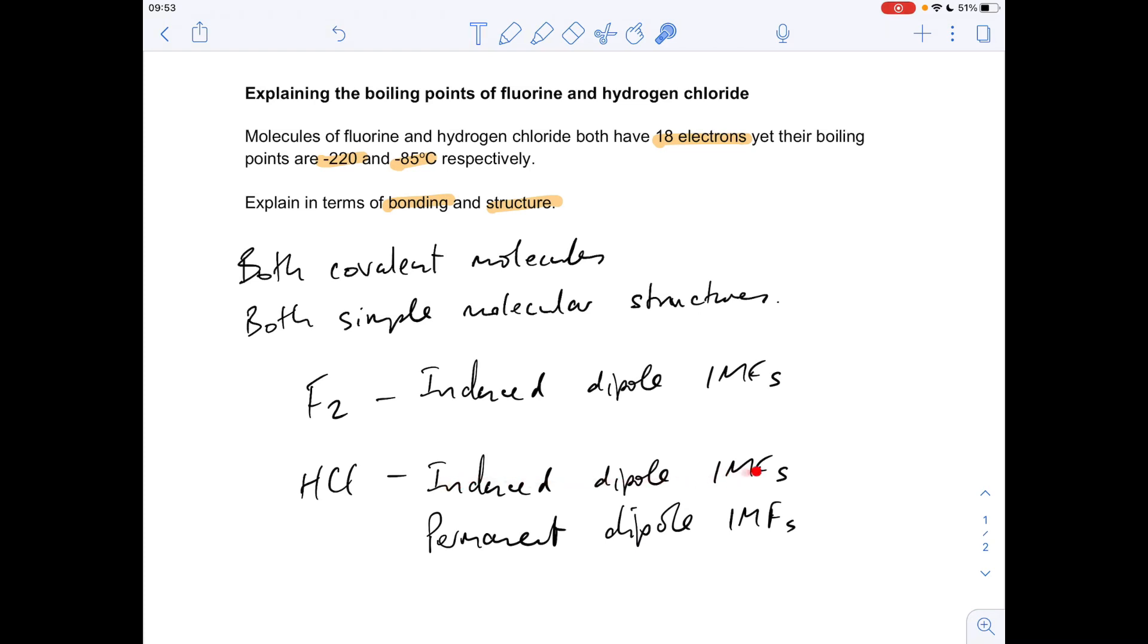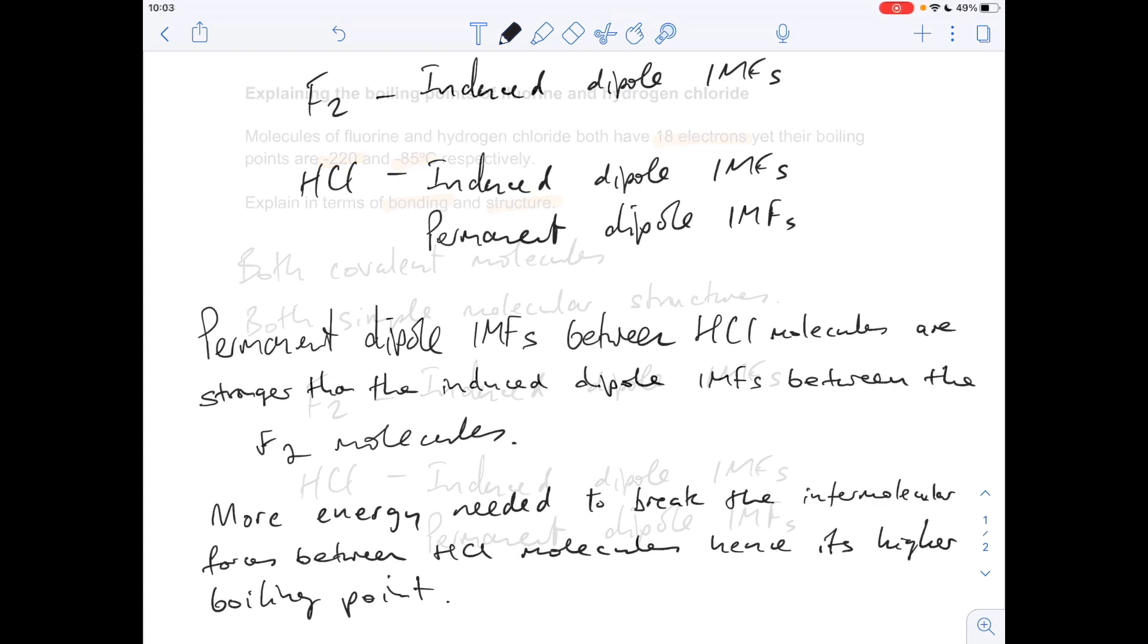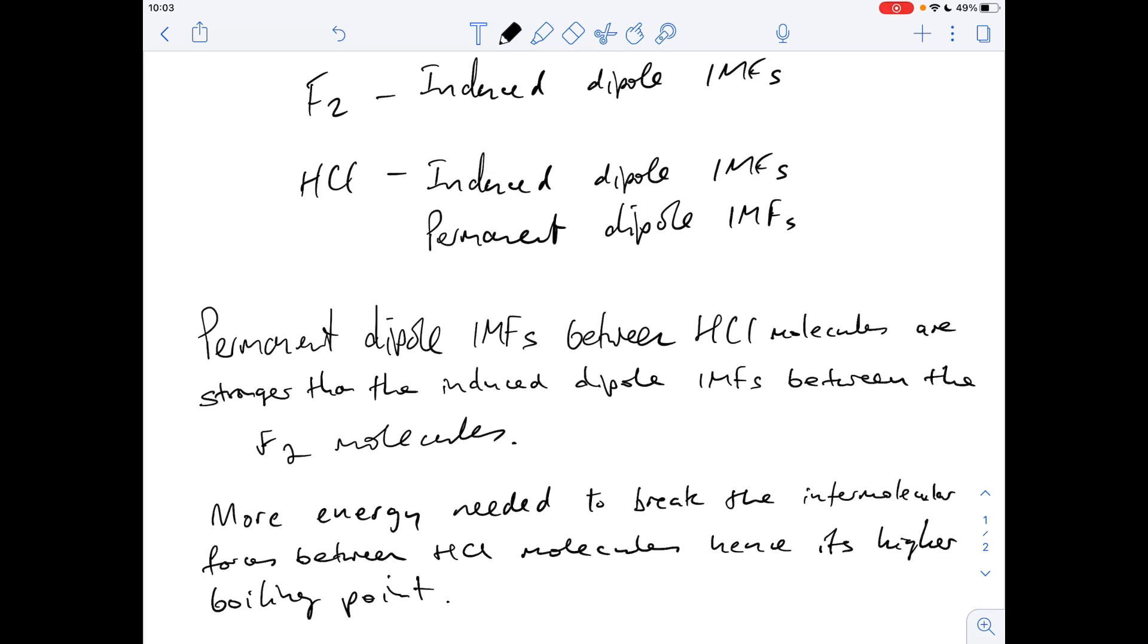Remember, all molecules have induced dipole intermolecular forces, but because they've both got 18 electrons, it's going to have to be down to the relative strength of the permanent dipole forces in the HCl molecules compared to the induced dipole forces between the F2 molecules. So we just need to say something like this: the permanent dipole intermolecular forces between the HCl molecules is stronger than the induced dipole intermolecular forces between the fluorine molecules.